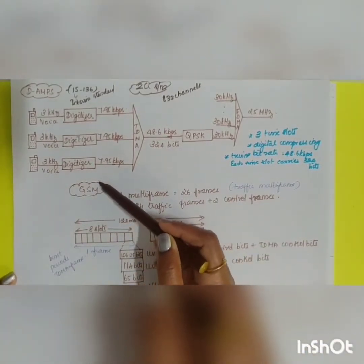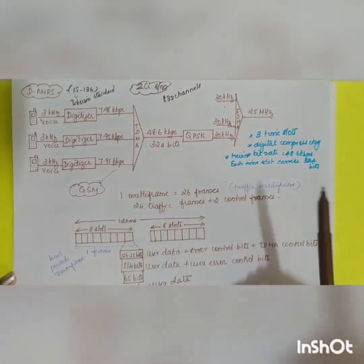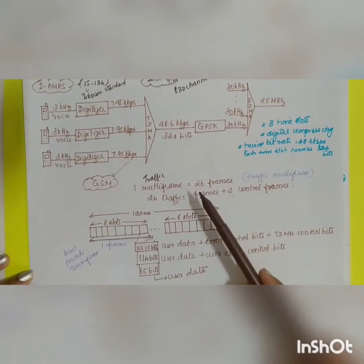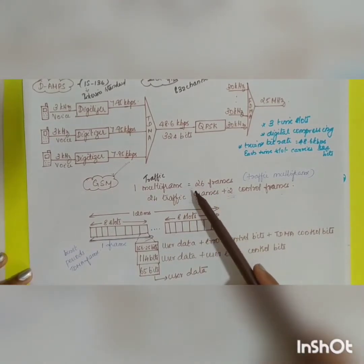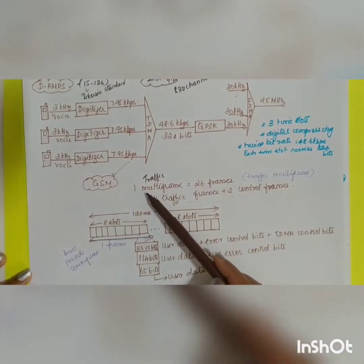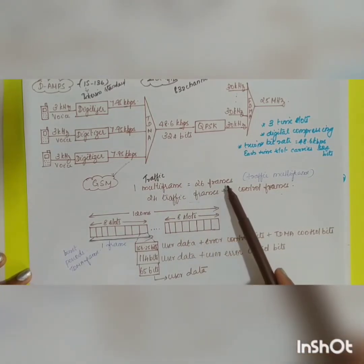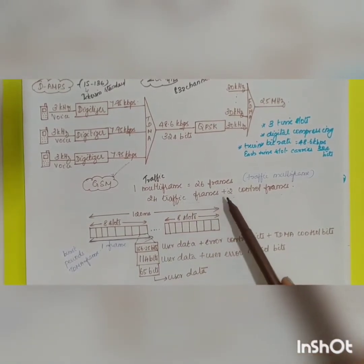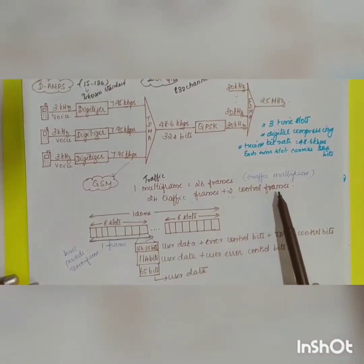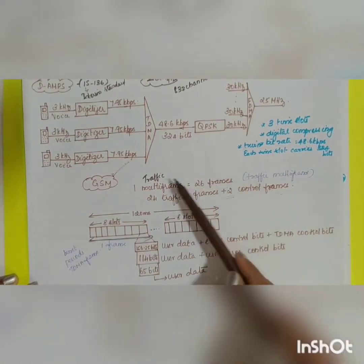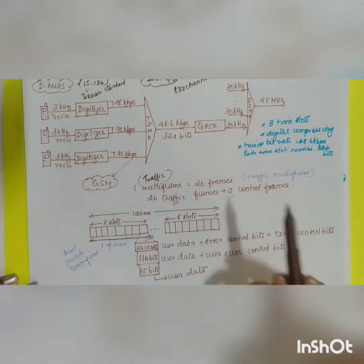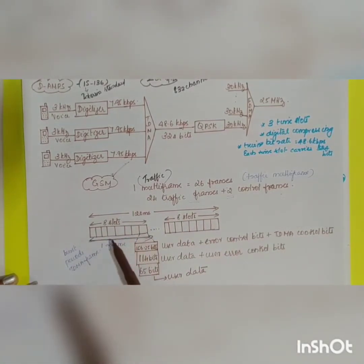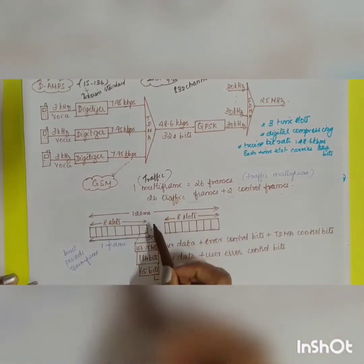Moving on to GSM — Global System for Mobile communications. The frame structure of GSM is divided into hyper frame, super frame, multi frame, and frame. One multi frame is formed by a combination of 26 frames; among these, 24 are traffic frames and 2 are allotted for control frames, making it a traffic multi frame.